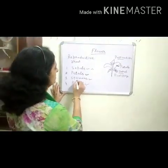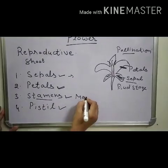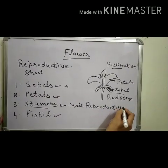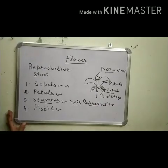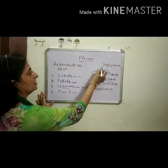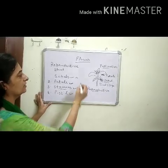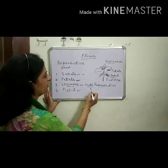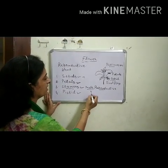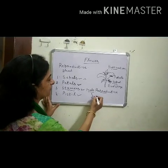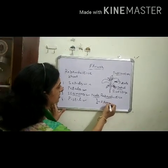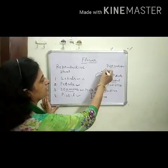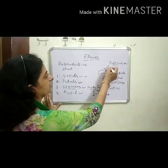The next one is the stamens. Stamens are the male reproductive part of a flower. Stamen is comprised of two parts: the lower one is the filament and the upper one is the anther.